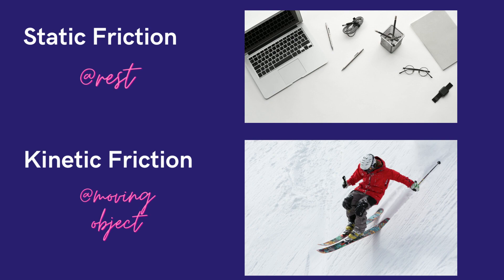Frictional force can either be static or kinetic. Static friction is the friction between the surfaces of an object at rest — this is the amount of force one needs to overcome when setting an object that is at rest into motion. Kinetic friction is the resistance that a moving object meets as it slides or rolls on the surface; this is the amount of force one needs to supply in order to keep a moving object moving.